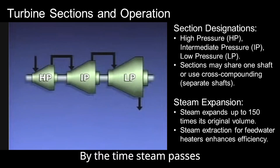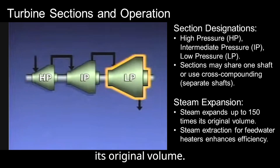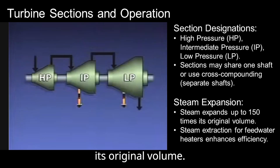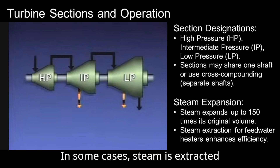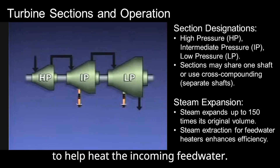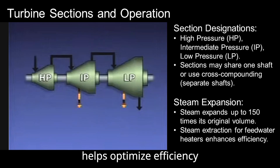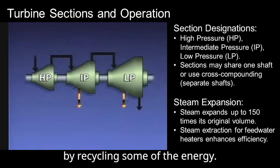By the time steam passes through all the stages, it can expand up to 150 times its original volume. In some cases, steam is extracted and sent to a feed water heater to help heat the incoming feed water. This extraction process helps optimize efficiency by recycling some of the energy.